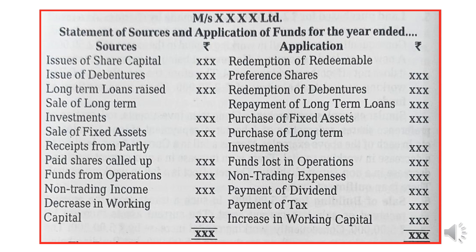On the source side: issue of share capital — we get money when we issue shares; issue of debentures; long-term loans raised; sale of investments; sale of fixed assets; receipt of partly paid shares called up and collected. Most importantly, funds from operations is written as a source, along with non-trading income, and most importantly, a decrease in working capital. So by preparing the statement showing changes in working capital, we get either a decrease or increase in working capital. A decrease in working capital is considered a source, as are funds from operations.